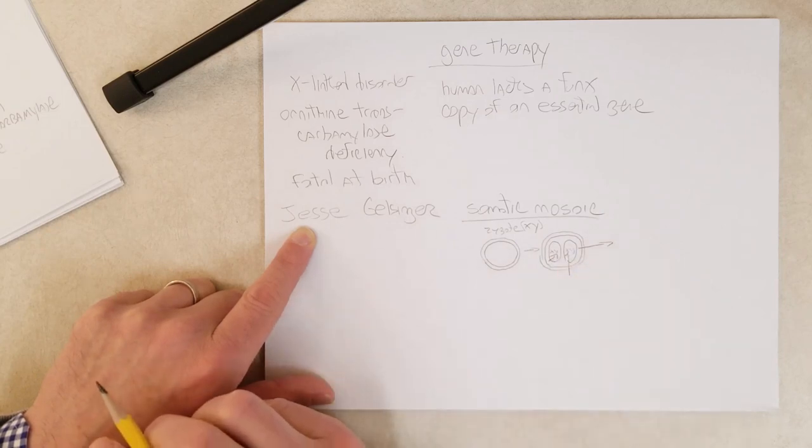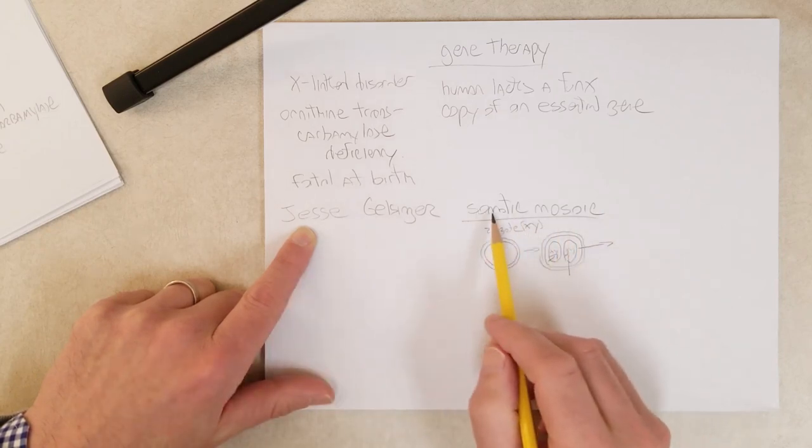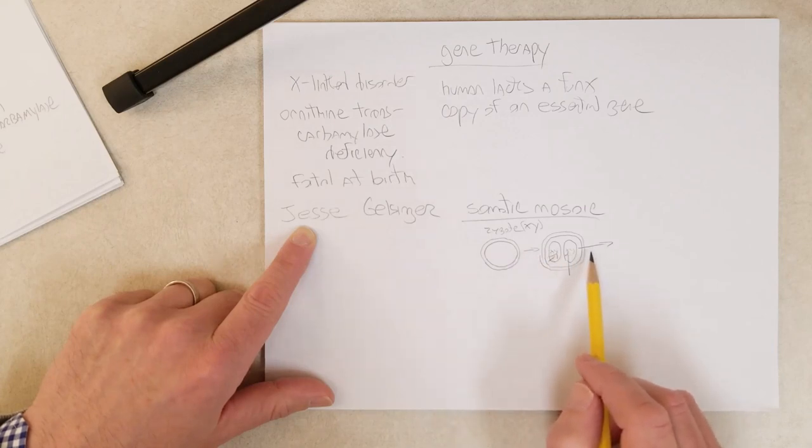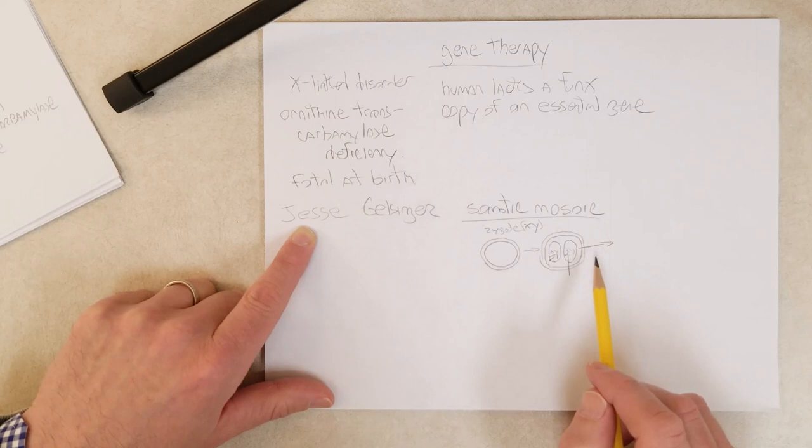So this is an example of somatic mosaicism, where you have a mutation very early on during embryogenesis. So part of the cells of the individual have a mutation, while other cells do not have that mutation.